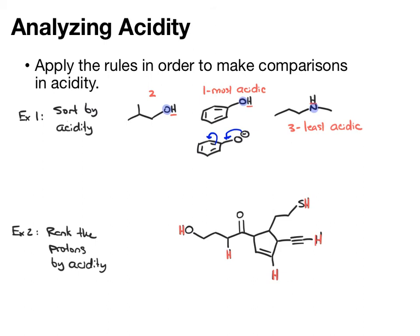In this next example, we're asked to rank these indicated protons by acidity. Again, we'll apply the rules in order. Start with the atom effect. Identify the atom that the acidic proton is bonded to in each case.